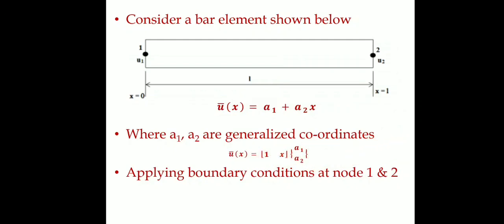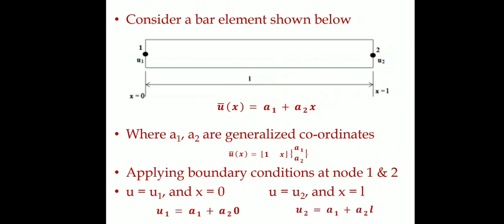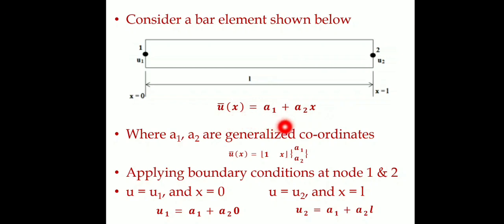Applying boundary conditions: u = u1 at x = 0, and u = u2 at x = L. Substituting x = 0: u1 = a1 + a2·0, so u1 = a1. Substituting x = L: u2 = a1 + a2·L. These two equations give us [u1, u2]ᵀ = [1, 0; 1, L] · [a1, a2]ᵀ.